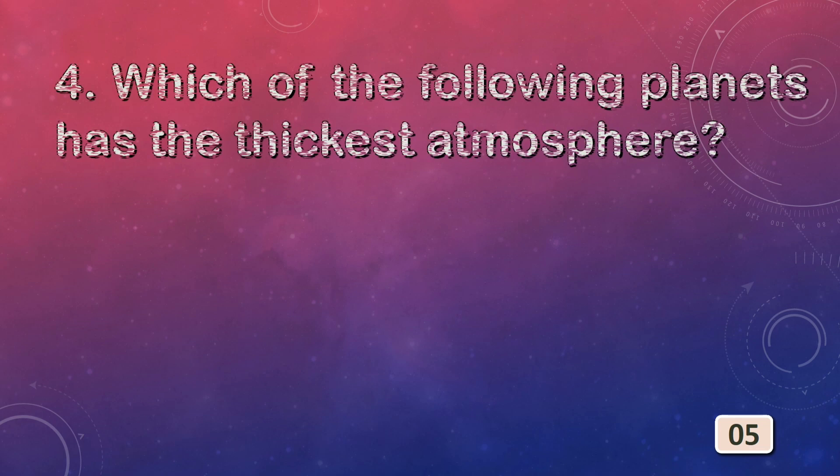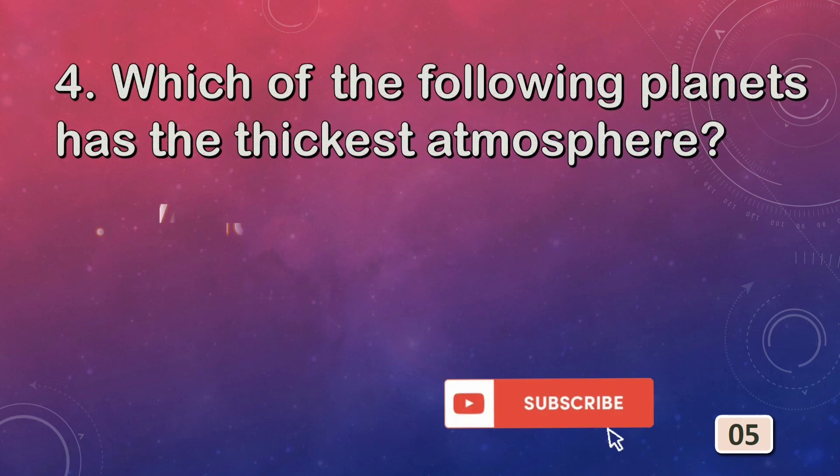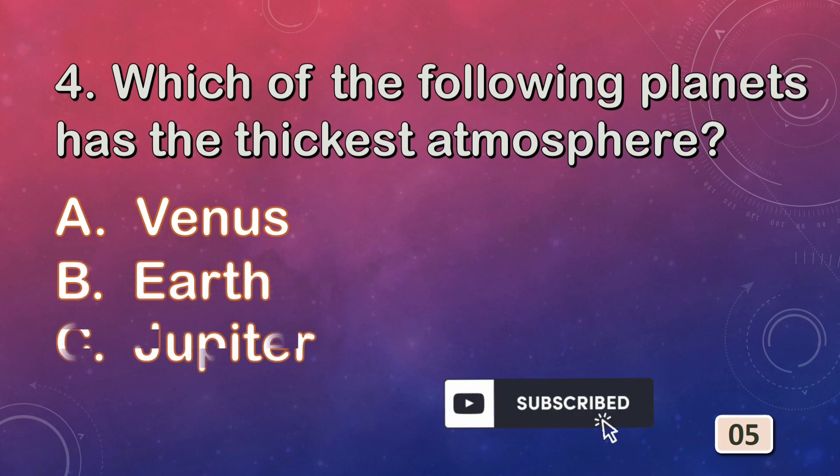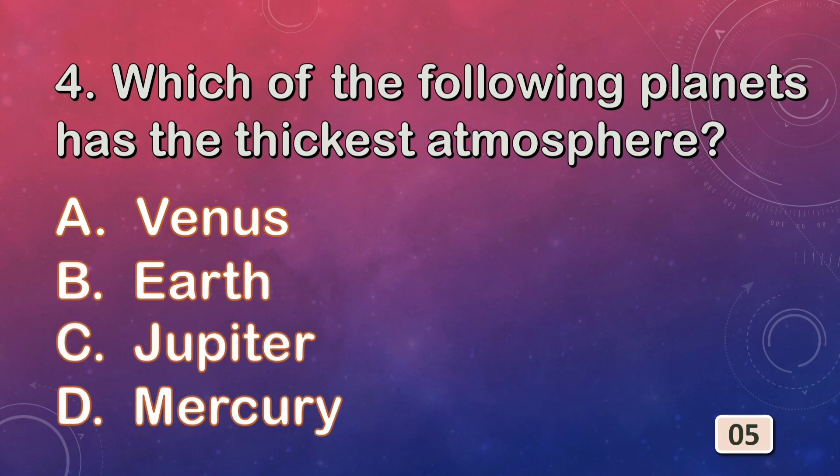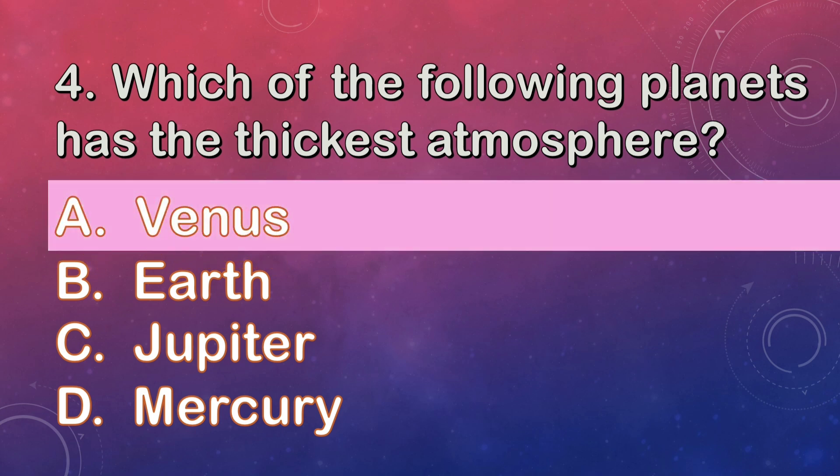Which of the following planets has the thickest atmosphere? Options are: A. Venus, B. Earth, C. Jupiter, or D. Mercury. The right answer is option A: Venus.